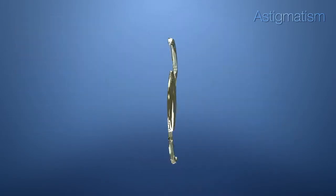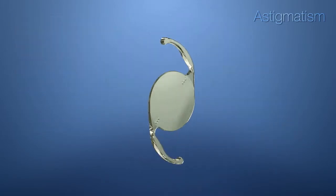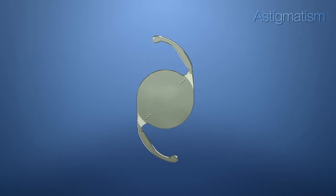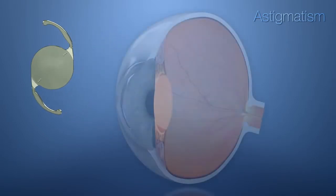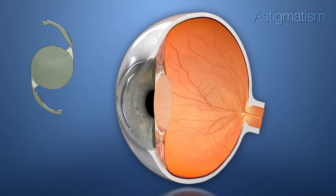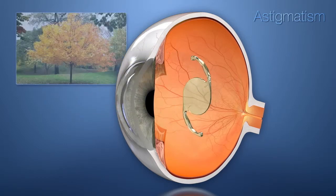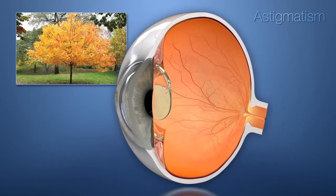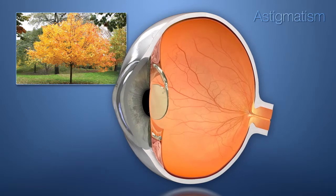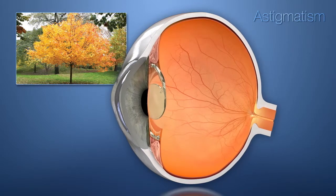Your astigmatism can be addressed at the time of your cataract surgery by choosing the Acrosoft IQ Toric IOL. Unlike a basic lens, which will correct your vision at one distance, the Acrosoft IQ Toric lens also corrects astigmatism by minimizing the effect of the misshapen cornea.